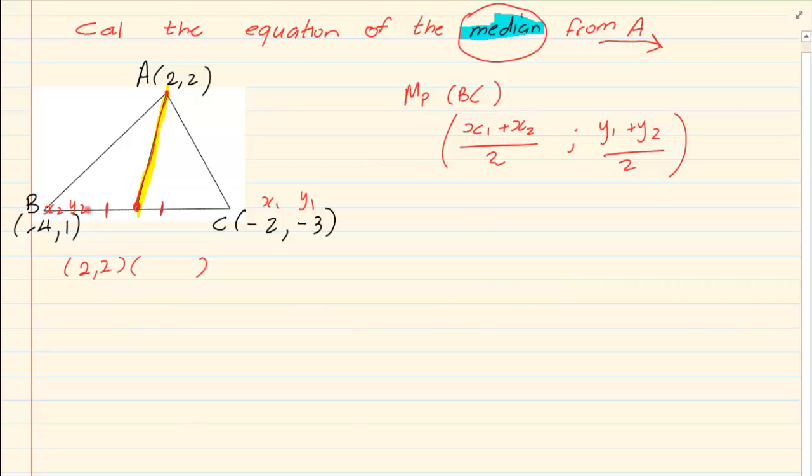So I am going to have minus 4 minus 2 all over 2, and I am going to have 1 minus 3 all over 2, which equals to minus 3 and minus 1.